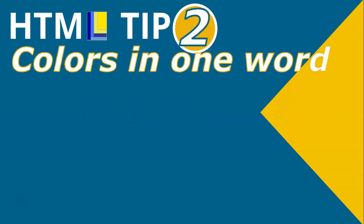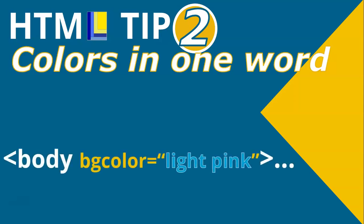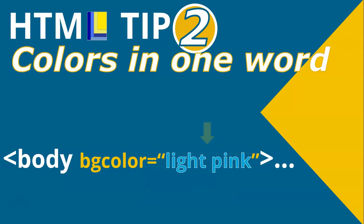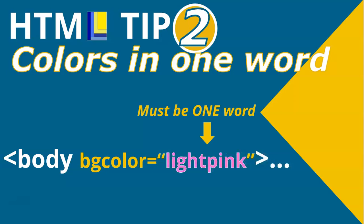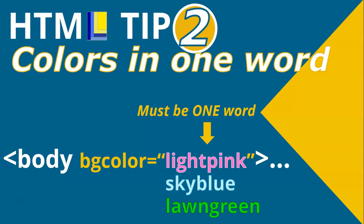HTML tip number two: colors must be in one word. When referring to a color, note that it's not British spelling — there's no U in color. Any color name must be in one word. For example, light pink will not work, but lightpink without a space will work. The same applies for skyblue or lawngreen.